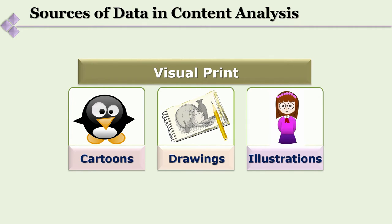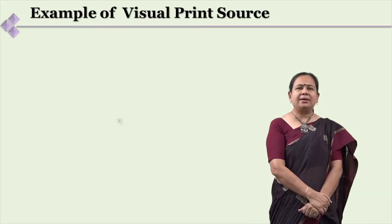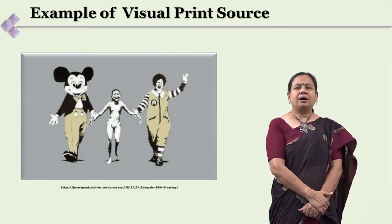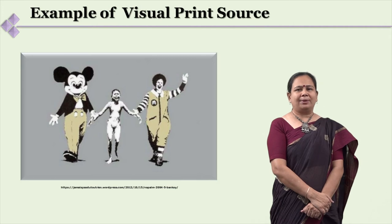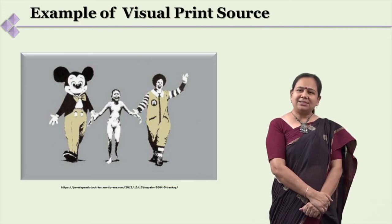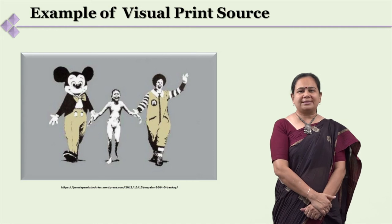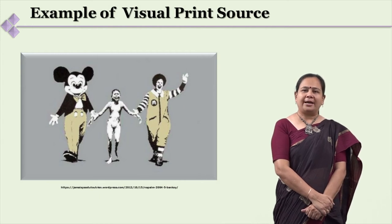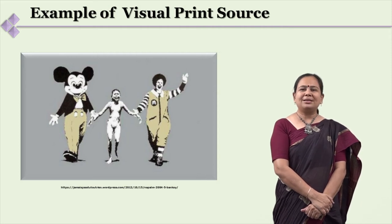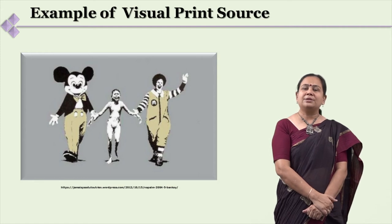You can look at illustrations, drawings, and cartoons — content analysis of visual content is another very interesting space. Here is another example: an image that is neither a photograph nor an illustration but a kind of visual. What comes to your mind? It features McDonald's — an international multinational food brand — alongside Disney, a major entertainment brand, with a figure in the middle representing poverty.